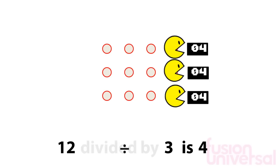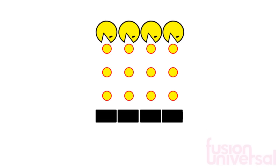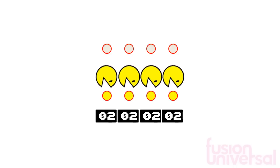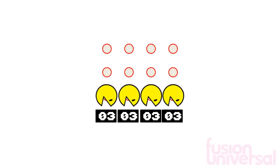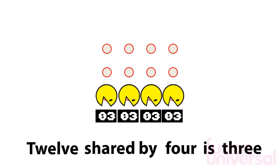And using mathematical symbols, 12 divided by 3 equals 4. But if there were 4 creatures, then working in columns, they would get 3 pills each.